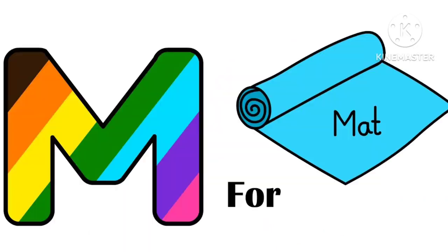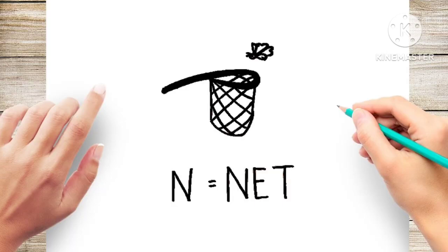M is for mat, m-m-mat. N is for net, n-n-net.